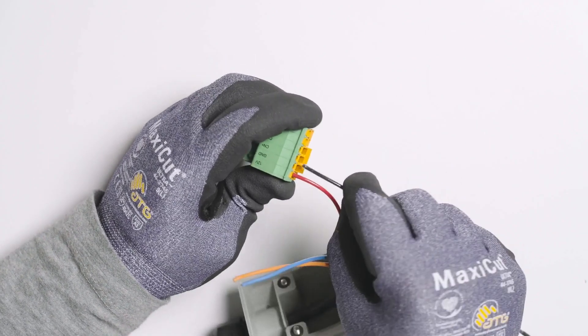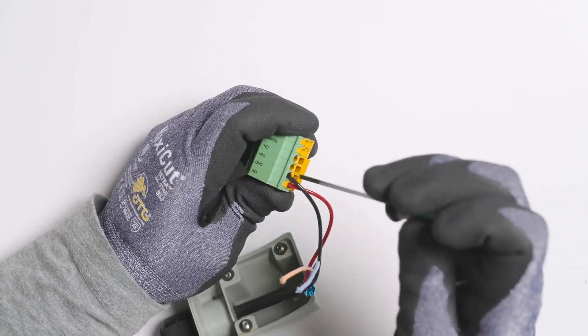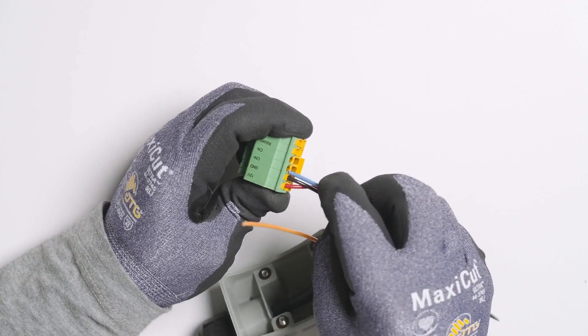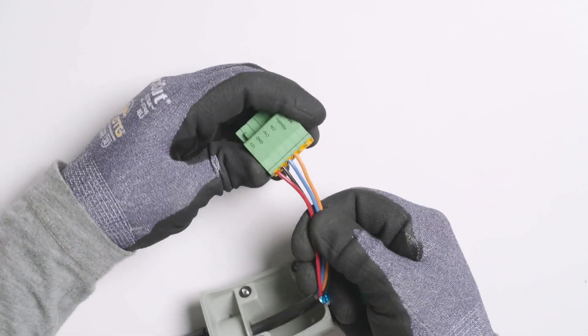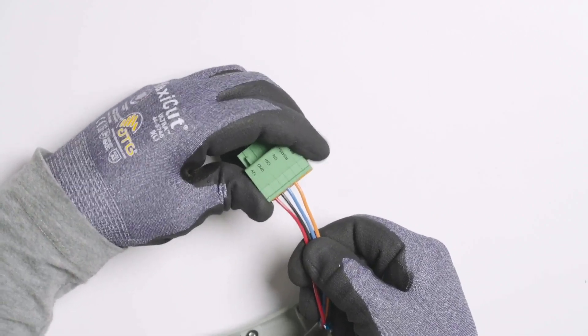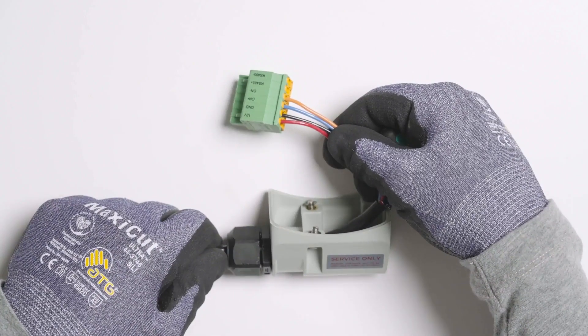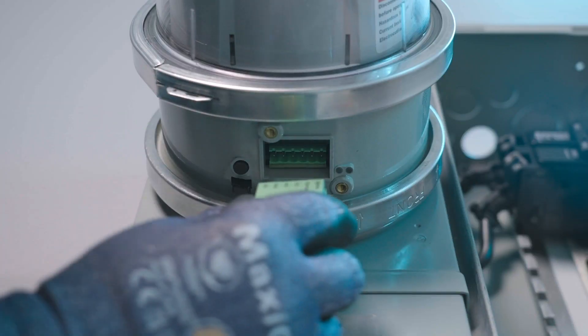Use a screwdriver to close the orange tab. As the orange tab is closed, the insulation around each wire is pierced, making an electrical connection to the terminal. Perform a slight tug test on each conductor to ensure that they are fully seated in the terminals. Once all four conductors are terminated and tug tested, plug the connector into the bottom of Backup Switch.